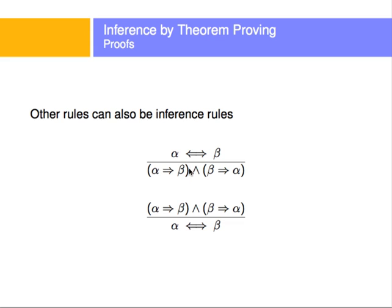These also come from the rules shown earlier. If alpha if and only if beta, we can rewrite this as alpha implies beta AND beta implies alpha. If we know that the above one is true, we can rewrite this as alpha if and only if beta. So we have these rules and ways to simplify some of these expressions.